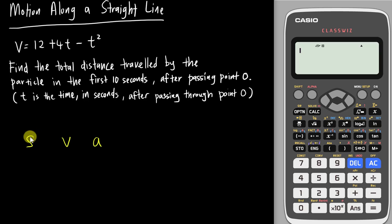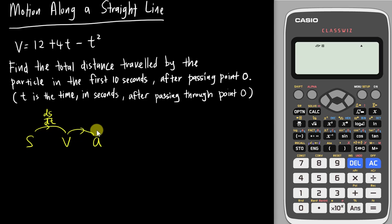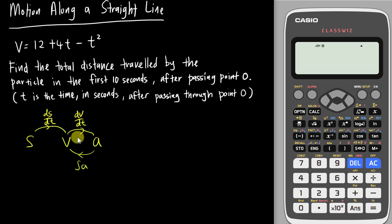If you have displacement and want to find velocity, you do ds/dt — meaning you differentiate the displacement. If you have velocity and want acceleration, you differentiate velocity. Conversely, if you have acceleration and want velocity, you integrate acceleration. And if you have velocity and want displacement, you integrate velocity.